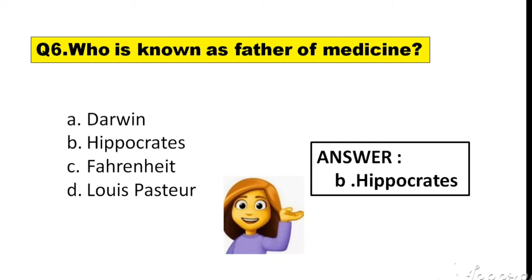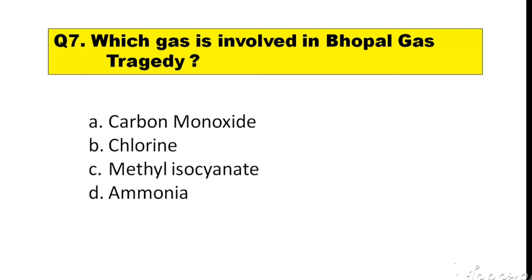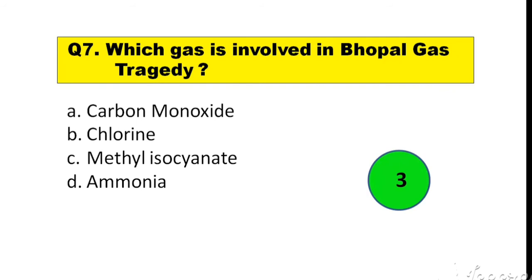Question number 7. Which gas is involved in the Bhopal gas tragedy? Options are: A. Carbon Monoxide, B. Chlorine, C. Methylisocyanate, D. Ammonia. The right answer is option C — Methylisocyanate.